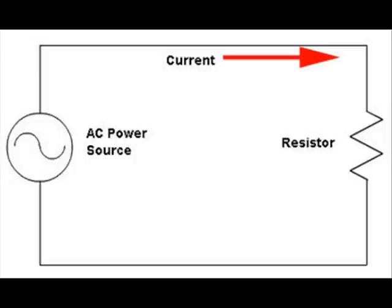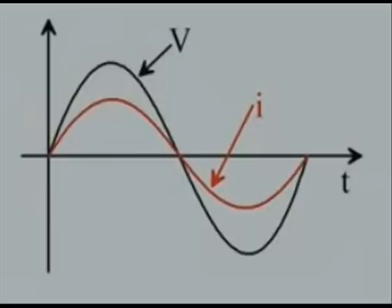For a purely sinusoidal voltage supplied by the source, let's draw the waveform of both current and voltage. Here in the picture, the black waveform represents the voltage and the red waveform represents the current.